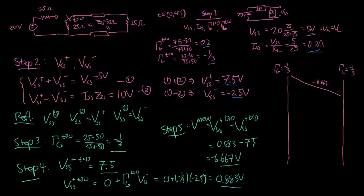The same result is what we have from the Thevenin approach. In either approach, you end up with these key parameters: a minus 6.667 wave going in, and both reflection coefficients equal to minus a third. One key difference is that now your starting point is no longer zero volts, because everything was initially charged. Before, this used to be zero — but at T equals zero, the voltage was five volts everywhere. It was the steady state voltage.